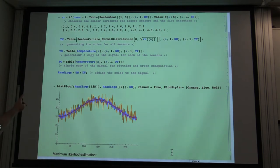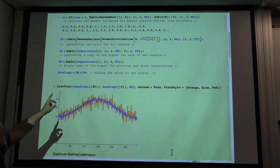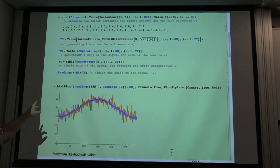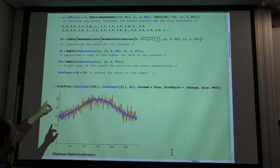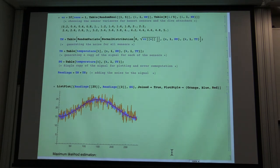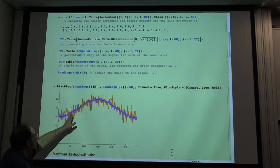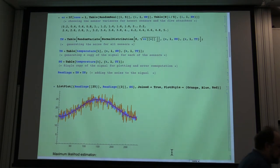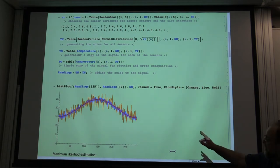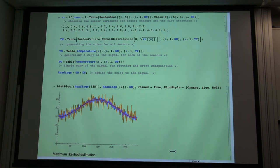Then you generate a table. Ts is the table of true readings, each one copy for each sensor. And then you simply produce readings by adding noise, Tn table of noise to the table of true values. And lo and behold, this is just a plot of a few sensors. You can see the blue sensor obviously has much smaller variance than the orange sensor.